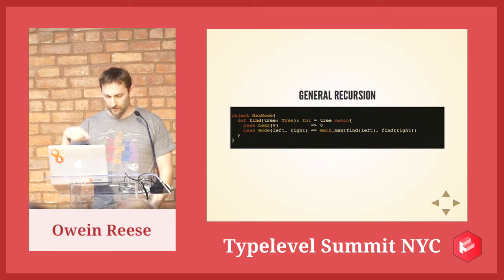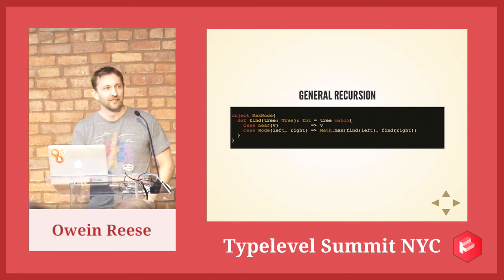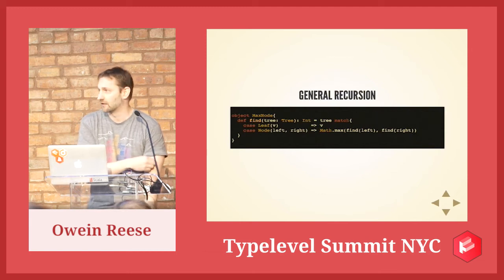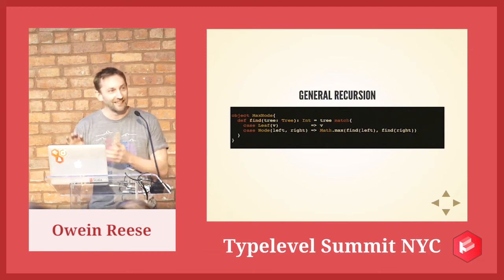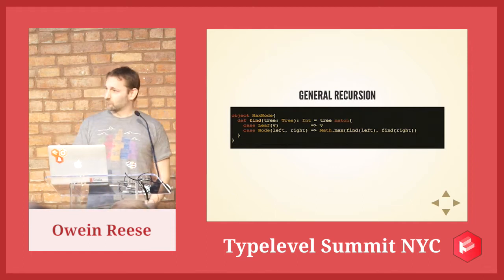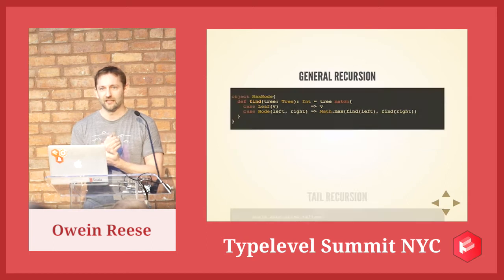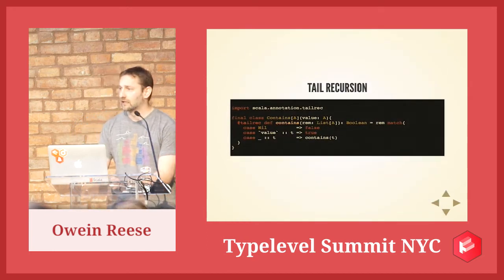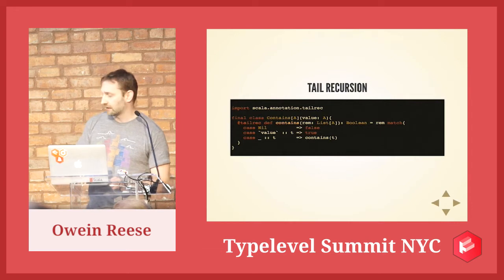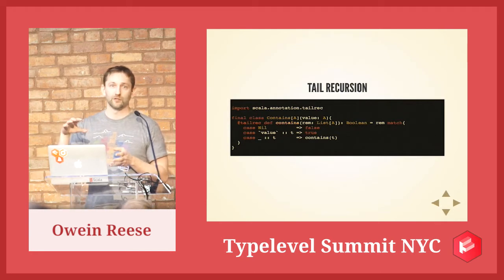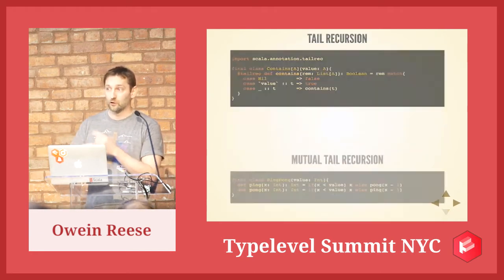Just a brief overview of recursion — which is kind of ironic, that a talk about explicit recursion is going to follow a talk about getting it out of your code. Here's general recursion. It blows a stack. With tail recursion, the difference is that the call is in a tail call position, which means the compiler can do a transformation and turn it into a looping construct.